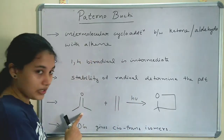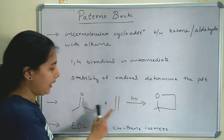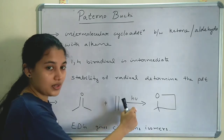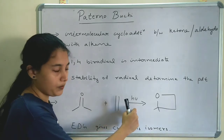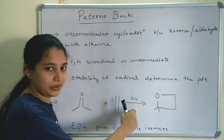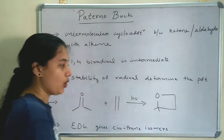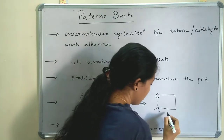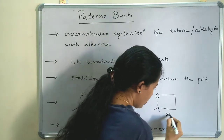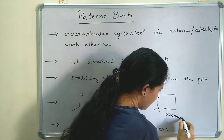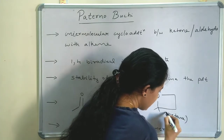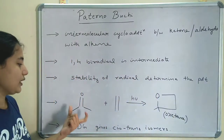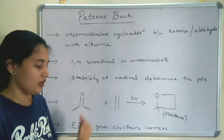This is the general reaction of the Paternò–Büchi reaction. Here is the ketone and here is the alkene. In the presence of hν — a photochemical reaction — it will give oxetane. This is oxetane, formed by the cycloaddition of ketone and alkene.